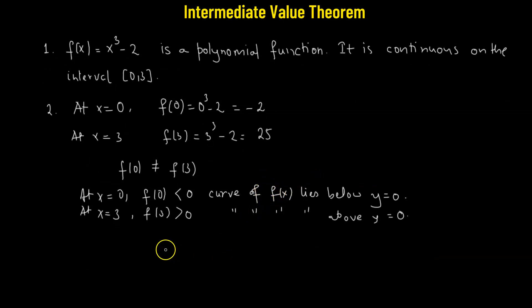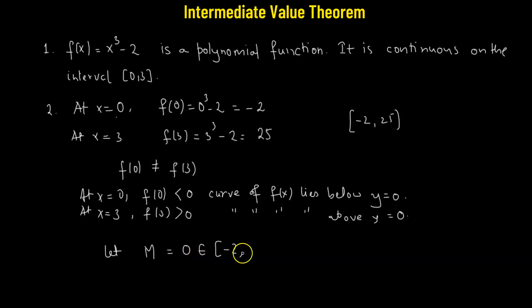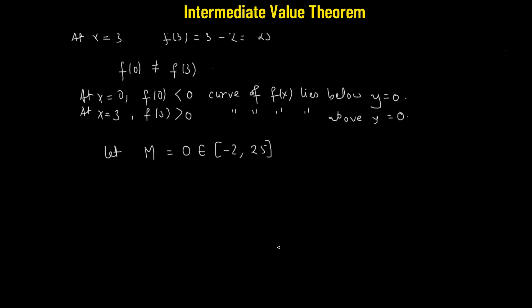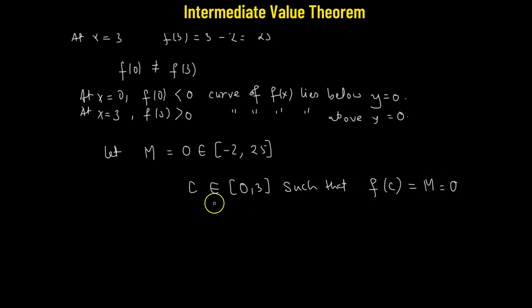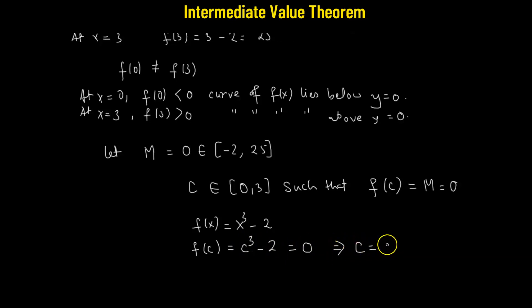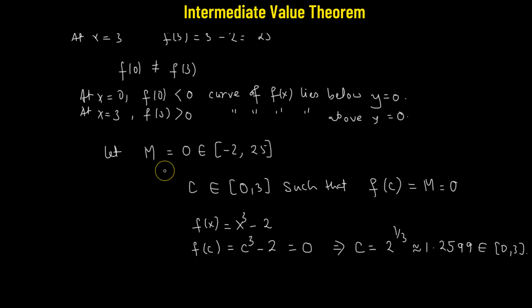Now, since we have the value of the function calculated at the boundary points lying between negative 2 and 25, we will suppose that let the value of m be 0, and this is lying between the interval negative 2 and 25. Now what we need to do is we need to find a value of c. This c must lie between the interval 0 and 3 such that f of c equals to the value m, which is equals to 0. So our f of x is given by x cubed minus 2, so f of c will be c cubed minus 2, and this should be equals to 0. So that means the value of c will be equals to 2 raised to the power of one third, whose value is approximately 1.2599. And clearly this value lies between the interval 0 and 3.